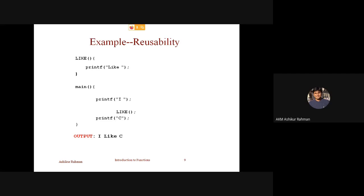Now the thing is, a function — if you call a function, it can be called multiple times. If I write a loop: for i equals to 1, i less than or equals to 5, i plus plus — like, call once, print; i equals to 2, call again, print. If I go up to 5, print five times — so for each bar, print. That's five times with a loop.